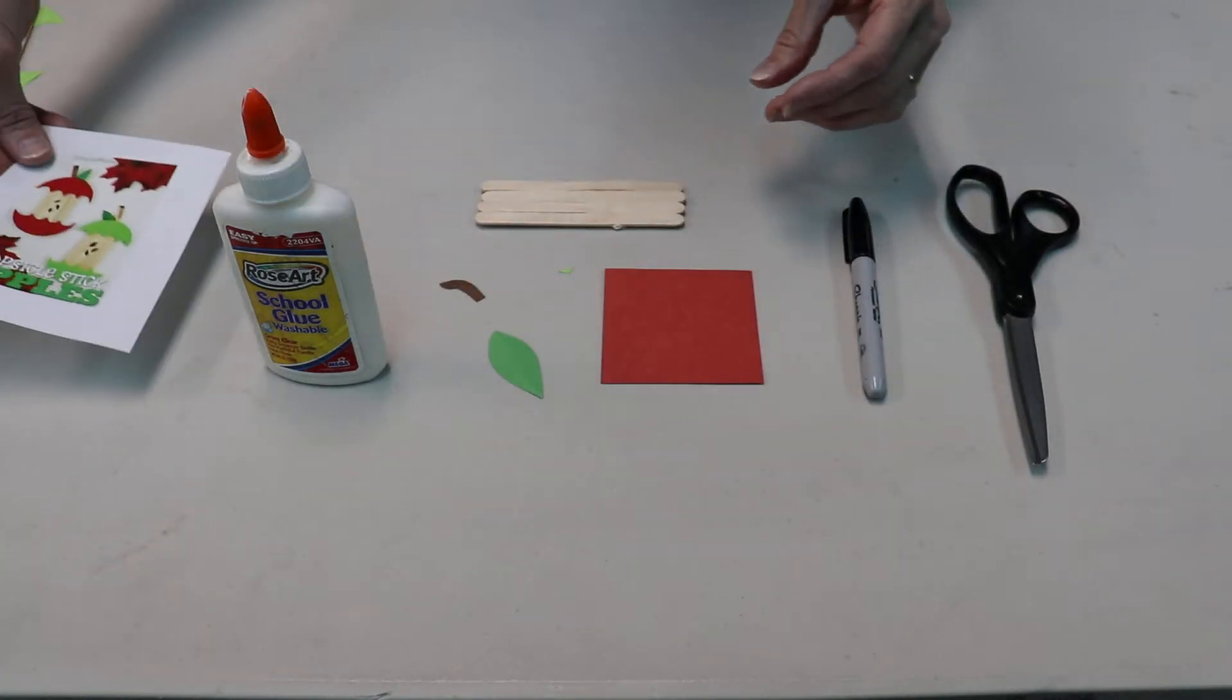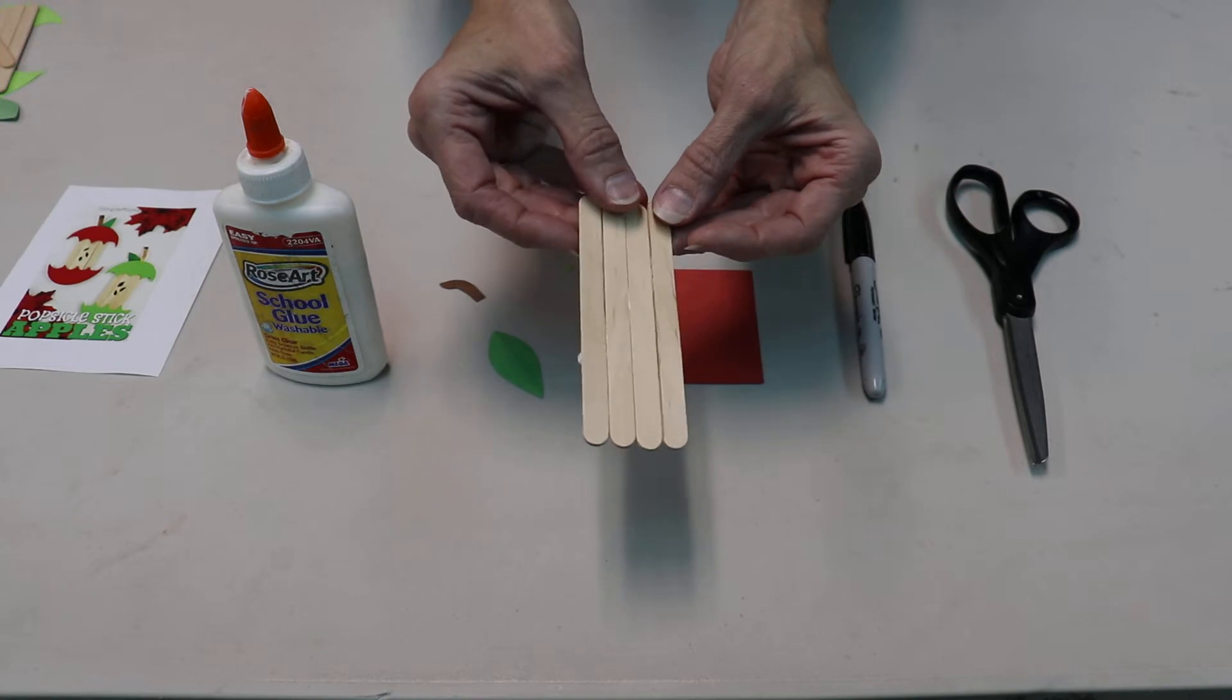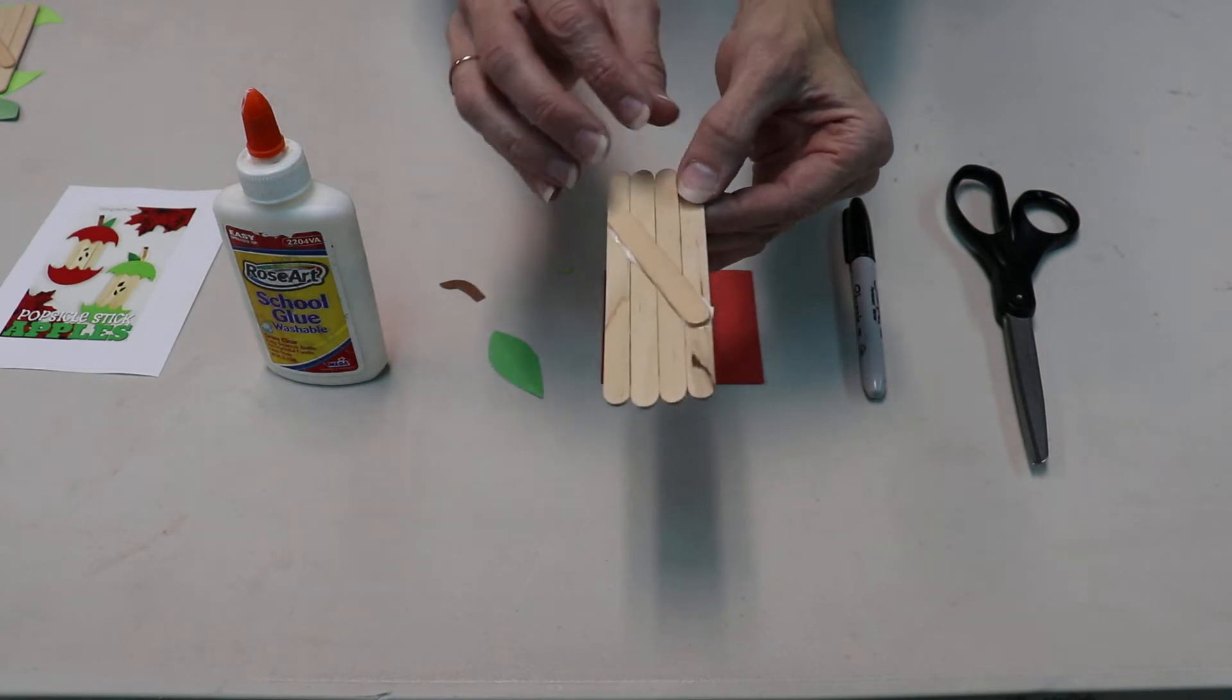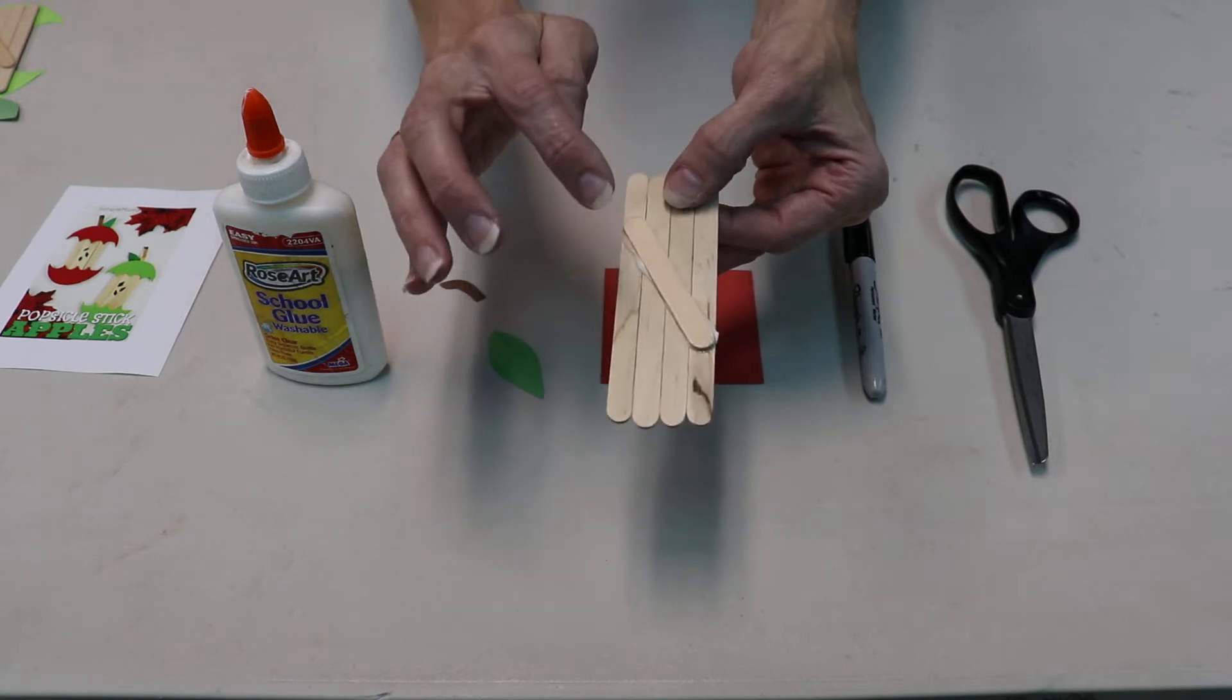We're gonna take four popsicle sticks and put them together side by side just like that. And on the back, you're gonna take the really small popsicle stick and glue it diagonal like that so they all stick together.